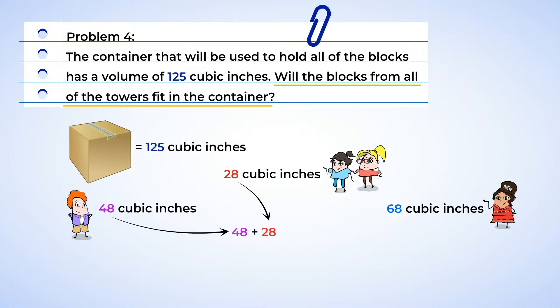Now when we add 48 and 28, we get 76 cubic inches. And next we can add in Isabella's 68 cubic inches for a total of 144 cubic inches.